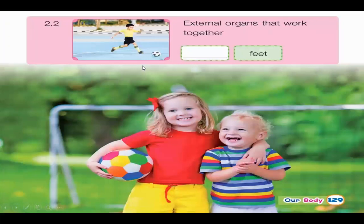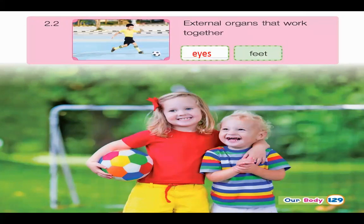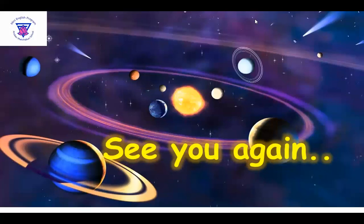Next, we have external organs that work together. Look at this boy — he is playing football. When you play football, which external organs do you use? Of course, that is the eyes and feet. Without your eyes, you can't see the ball and you can't kick it. They always work together in playing football. That's it, students. Thank you so much for listening, and we'll see you again next time. Bye-bye!